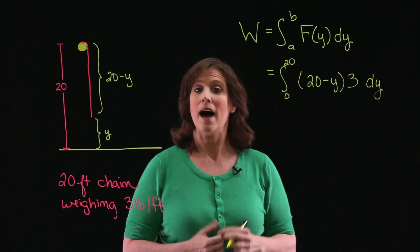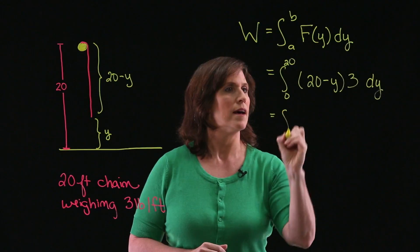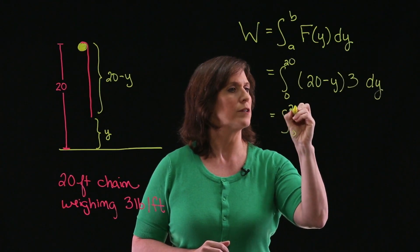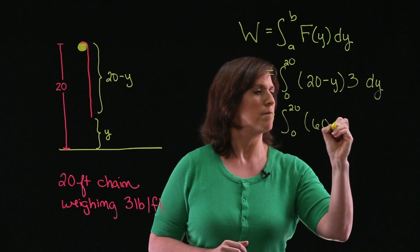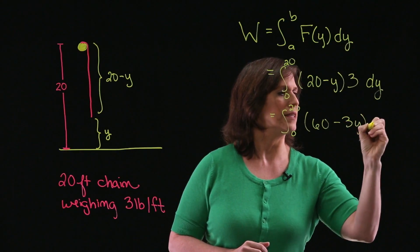Now that I have my formula set up, I need to integrate. So I have the integral from 0 to 20, and I'm going to write this as 60 minus 3y dy.